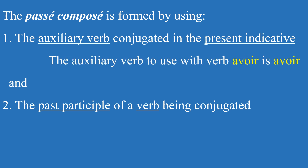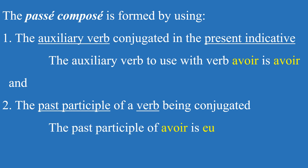Therefore, once we conjugate the auxiliary verb avoir in the present indicative tense, we just need to add the past participle of the verb being conjugated. The past participle of the verb avoir is eu, pronounced like eu and not like eux.